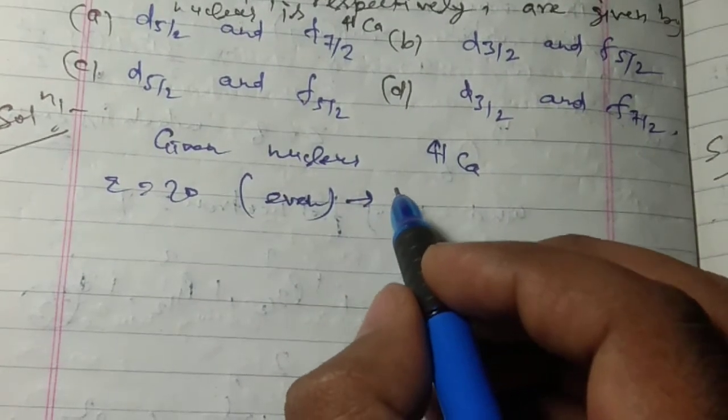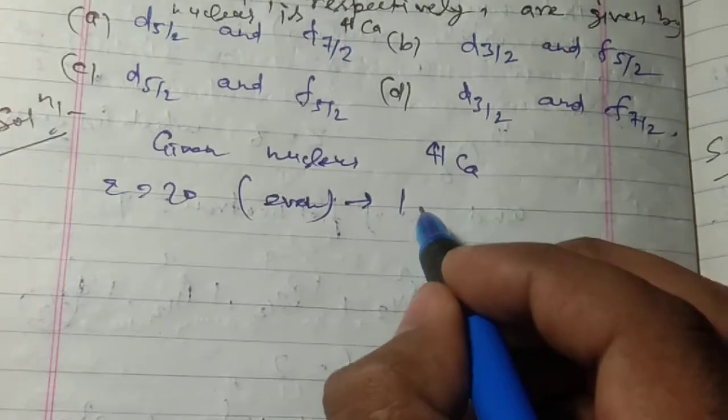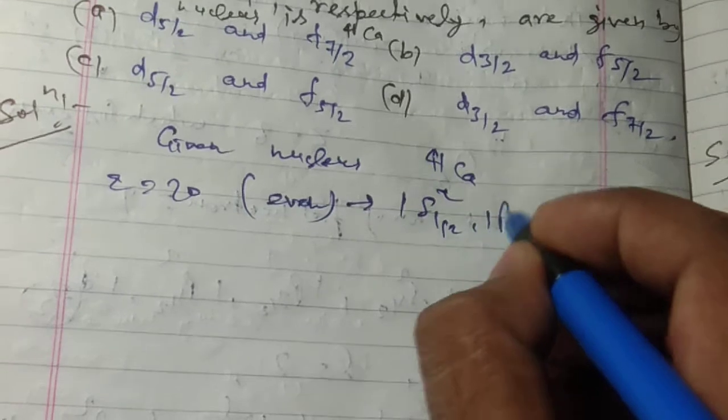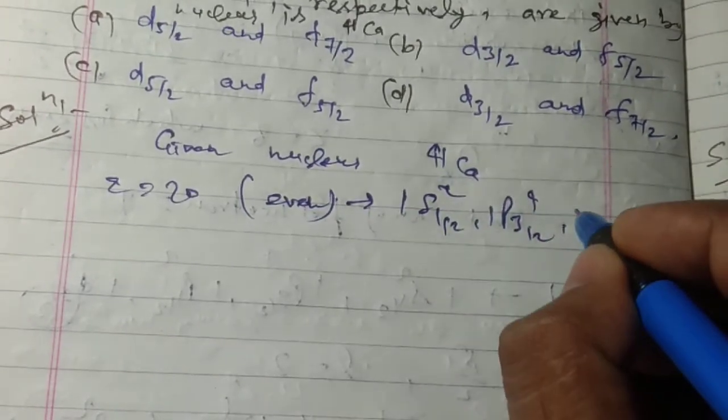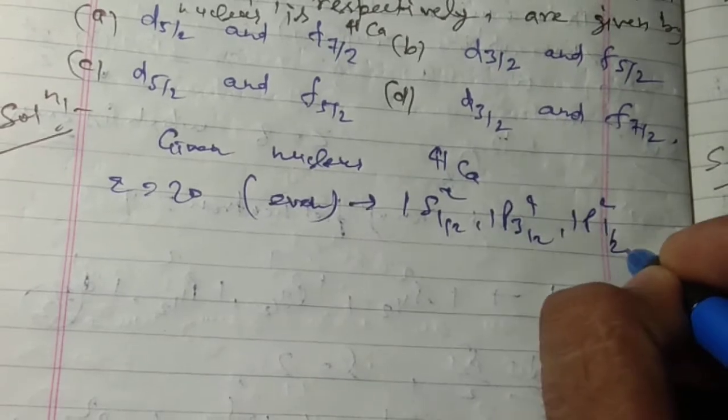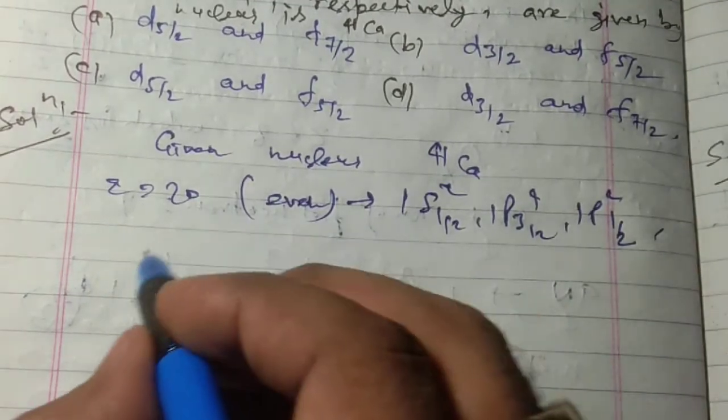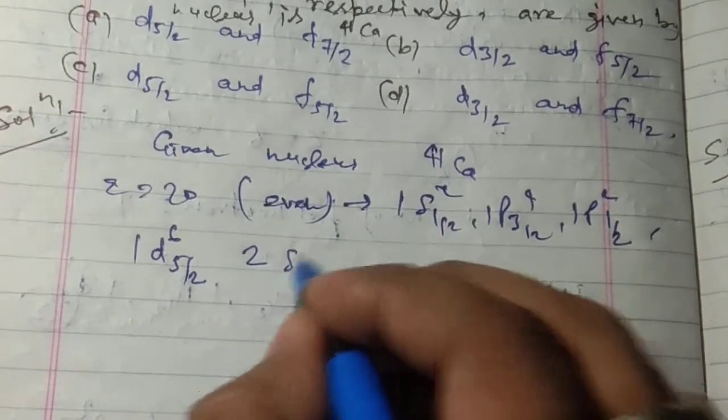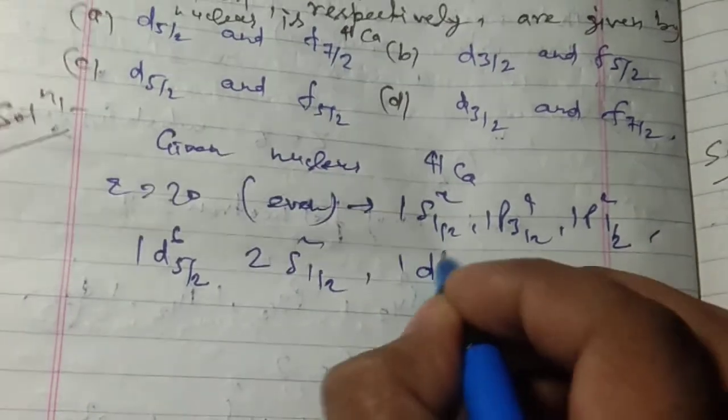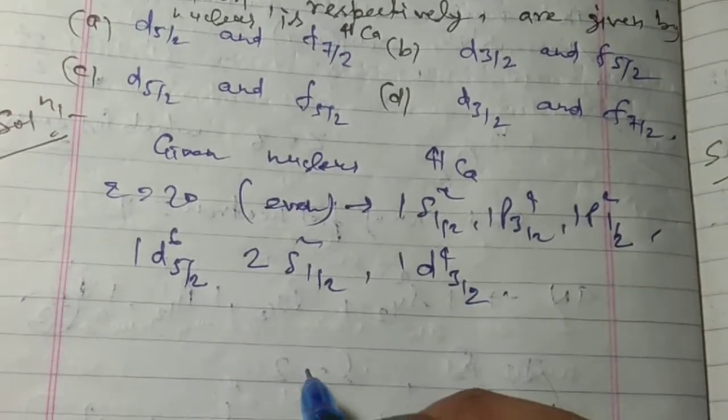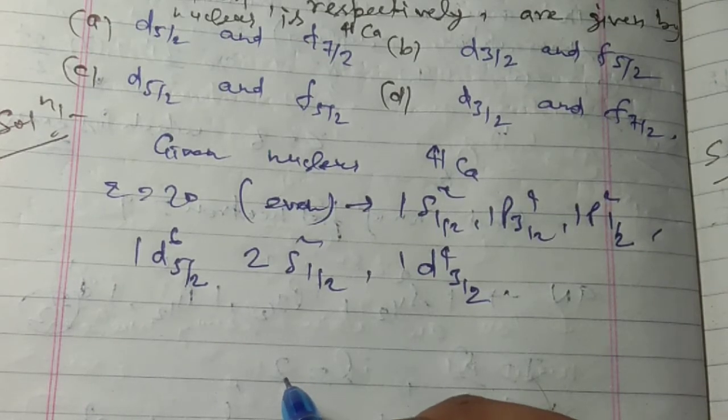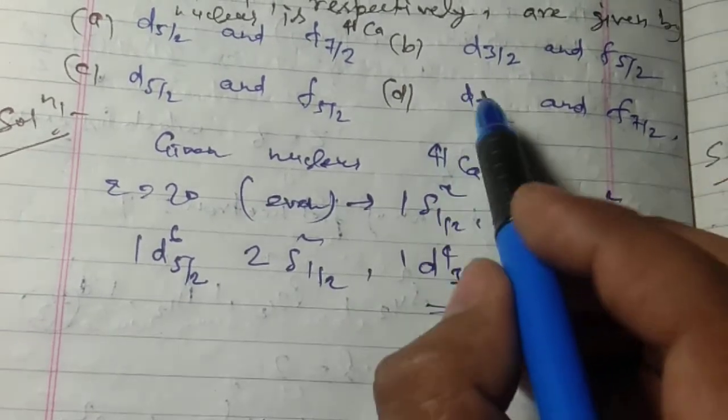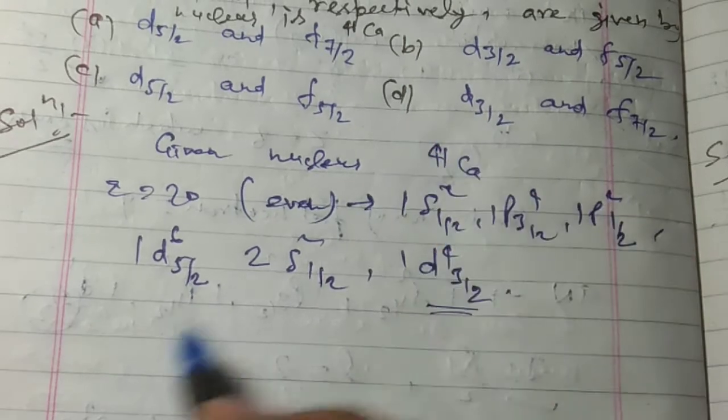But here we have to find the state, so this will give: 1s1/2, 1p3/2, 1d3/2, 1p1/2, 1d5/2, 2s1/2, and 1d3/2. So here the last term is d3/2.